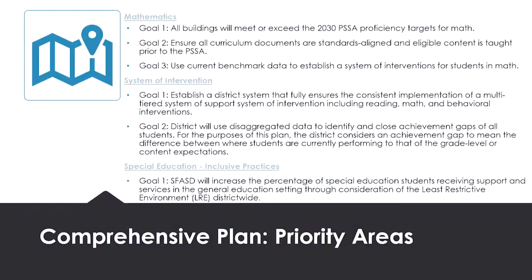I wanted to remind you of some of the things we had prioritized with our comprehensive plan. Under goal number one for math, all buildings will meet or exceed the 2030 PSSA proficiency targets for math. What we're doing right now in our grades five through eight band and algebra one — these documents are being finalized, along with product reviews so we can provide additional resources for our teachers. This includes professional development and new resources for our students. The K–4 curriculum review will occur next school year. We also have math intervention resources being utilized in grades five through seven for targeted math intervention.